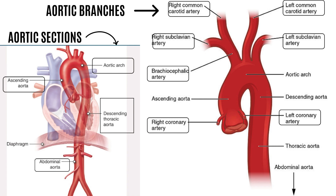I like to divide the aorta in sections for organizational purposes. The ascending aorta, which is its initial section, is located inside the visceral layer of the pericardium. The first branches of the ascending aorta are the coronary arteries. The coronary arteries supply oxygenated blood to the heart muscles.